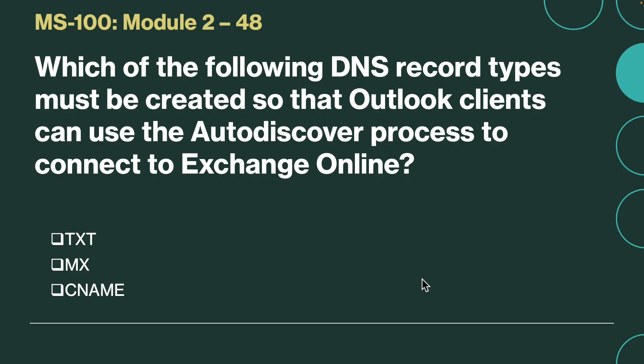Next question. Which of the following DNS record types must be created so that Outlook clients can use auto-discover processes to connect to Exchange Online? The correct answer is CNAME. Based on an Outlook client email address information and a CNAME record on the internet-located DNS, the client locates the auto-discover service in Microsoft 365. The auto-discover process then automatically connects Outlook to Exchange Online.